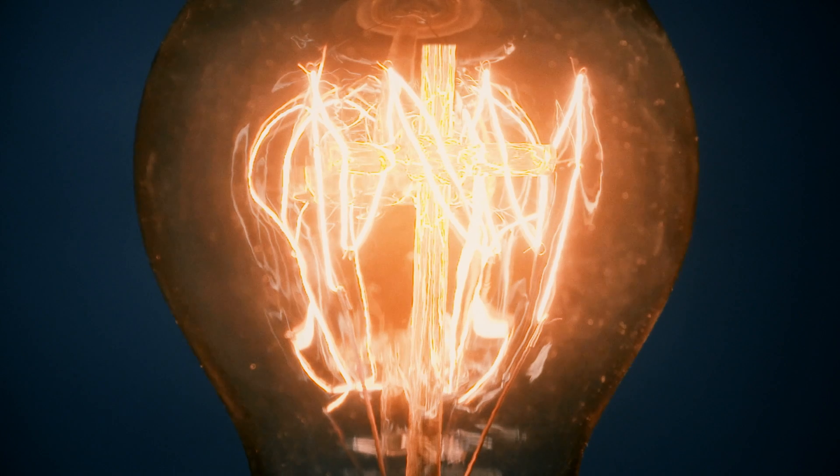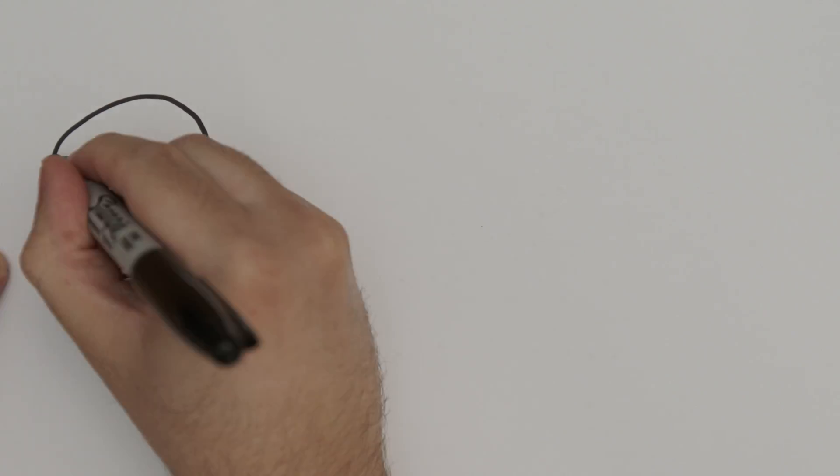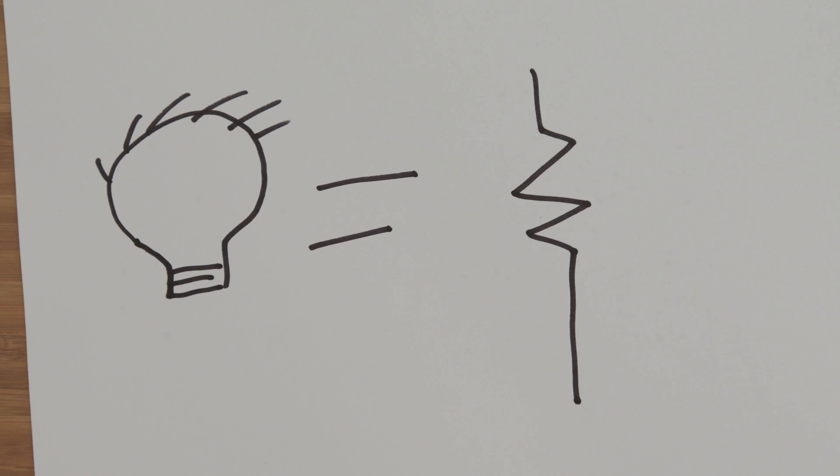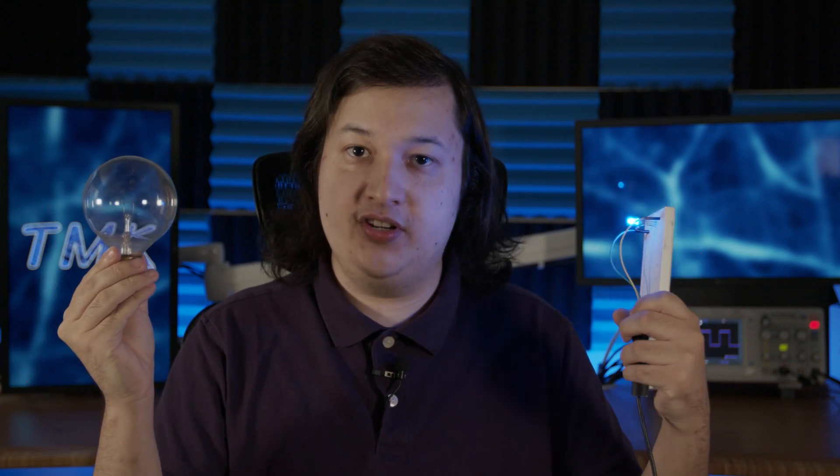Wait a second. They weren't lying to us all those years ago. Since a lightbulb is a resistor. And that's why the circuit works. From one of the greatest inventions in human history to helping us light up our own circuit.